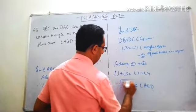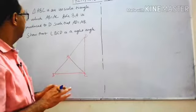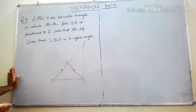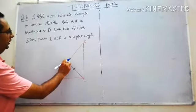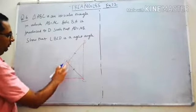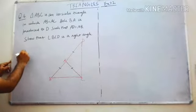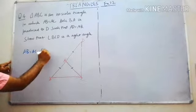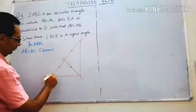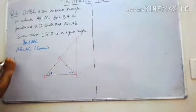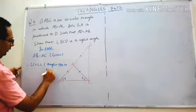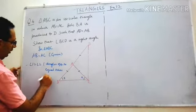Therefore angle ABD is equal to angle ACD — hence proved. Next question: triangle ABC is an isosceles triangle with AB equal to AC. Side BA is produced to D such that AD is equal to AB. Because AB equals AC, angle 1 equals angle 2 — angles opposite to equal sides. This is our first equation.